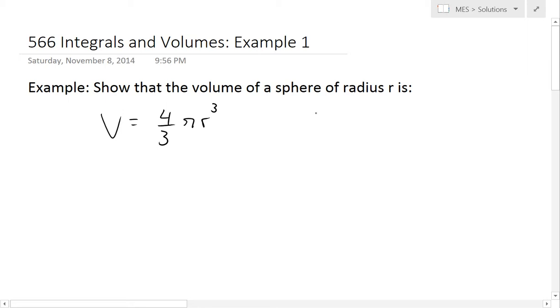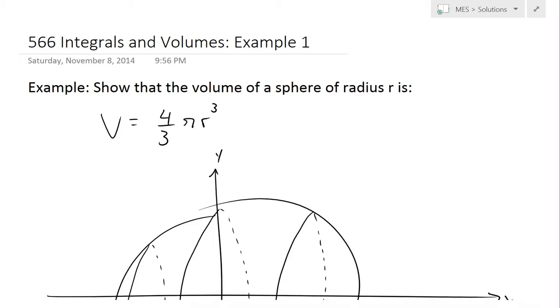Now I'll go over an example on finding the volume using integrals. I'll go over this example which shows that the volume of a sphere of radius r is volume equals 4 divided by 3 times pi r cubed. You're probably familiar with this equation.